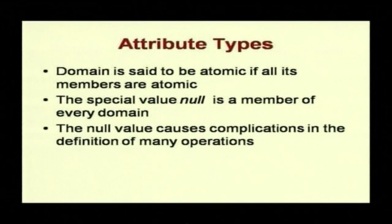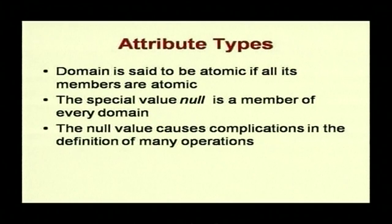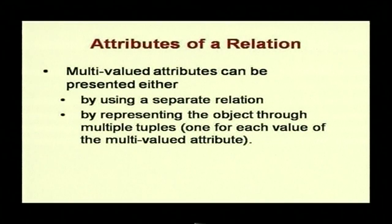A domain is said to be atomic if all its members are atomic. The special value null is a member of every domain — null is a member of the integer domain, the character domain, and so on. Null values cause complications which we will see later. Attributes of a relation can be multivalued; one way to handle this is to have a separate relation for that multi-value, or to represent it through multiple tuples.